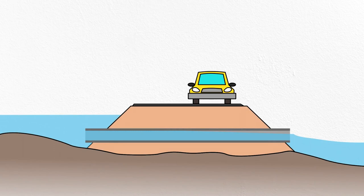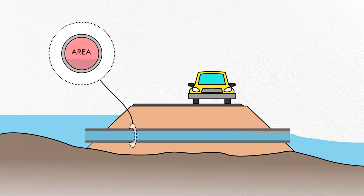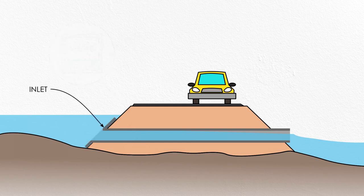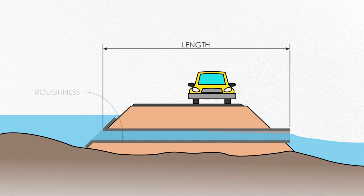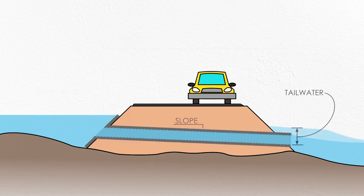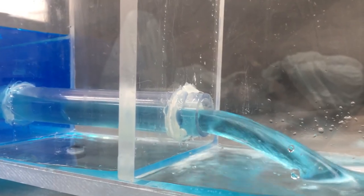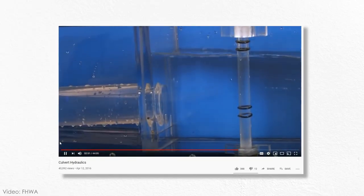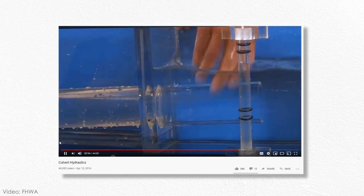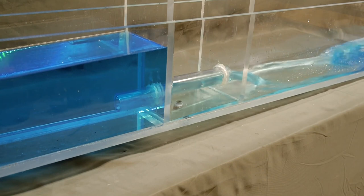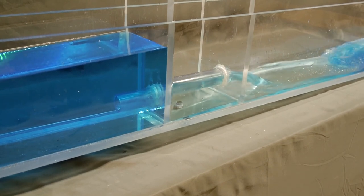Figuring out how much water can pass through a culvert before the roadway overtops is a pretty complicated question. There are eight factors that can influence the hydraulics of a culvert: headwater (the depth of flow upstream), the cross-sectional area of the culvert barrel, the cross-sectional shape of the barrel, the configuration of the culvert inlet, the roughness of the barrel, the length of the culvert, the slope of the culvert, and the tailwater (the depth of flow downstream). The Federal Highway Administration has a comprehensive video on YouTube with a much nicer flume if you want to see more.